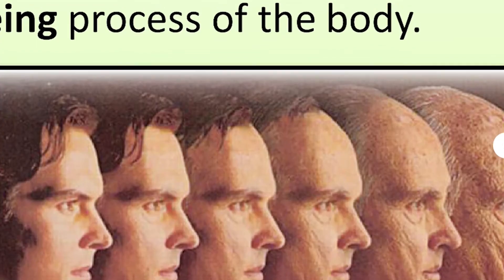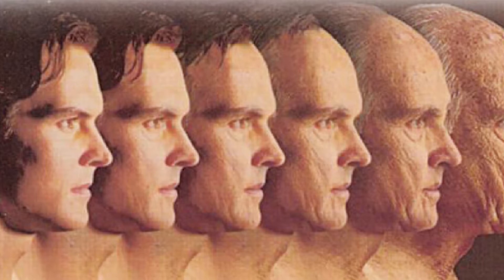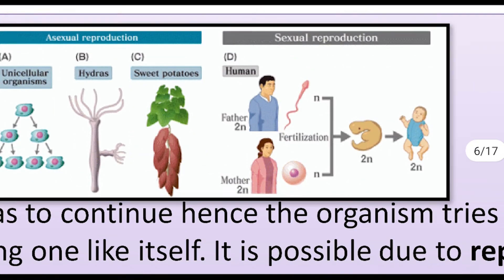Growth and development are not processes with an unlimited time span. They continuously take place until the death of the organism. At a certain point in time, molecules and organ systems begin to lose their effective working, and the organism becomes old. This process is called aging, as shown in the diagram where a young organism gradually undergoes growth, development, and finally aging.